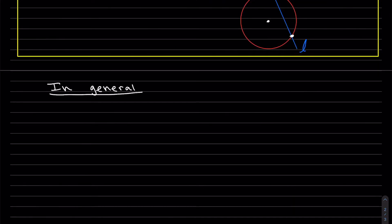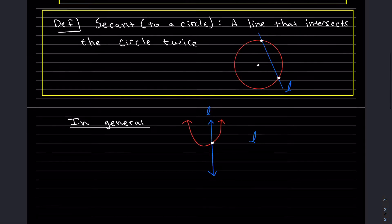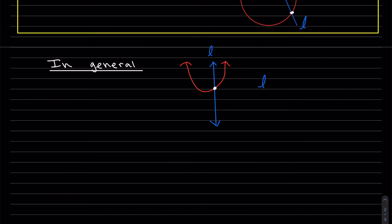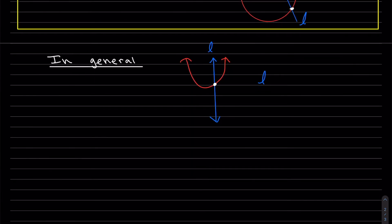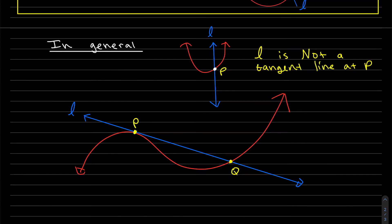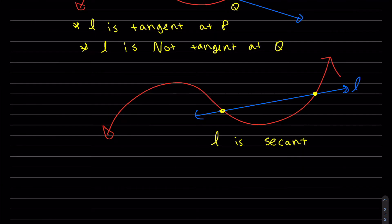Now we're going to define secant and tangent line in general. Remember, a tangent only crosses once. If that were true in general, then for this picture, L would be a tangent line — but we can see it doesn't look the same. So L here is not a tangent line everywhere; L is tangent at P and not tangent at Q. L is a secant line.